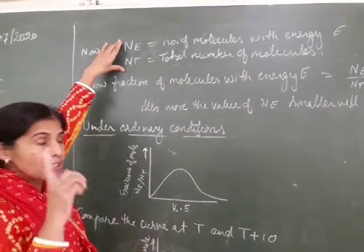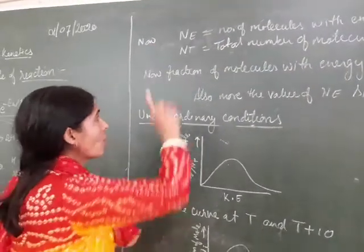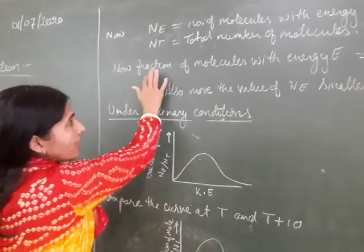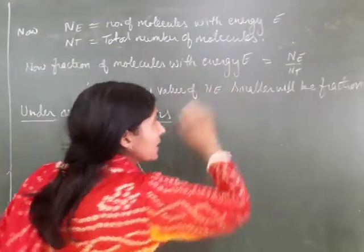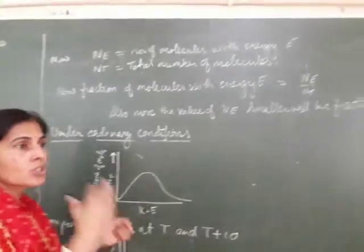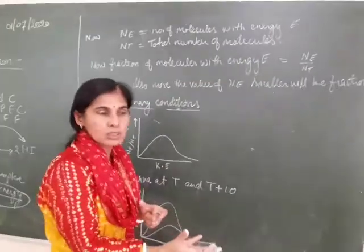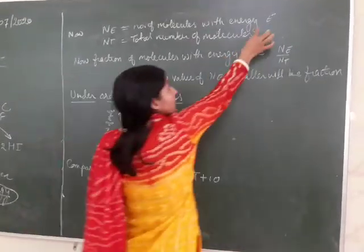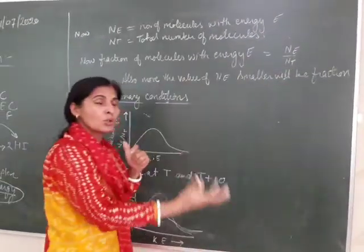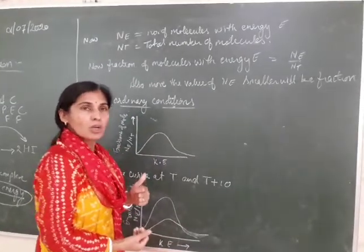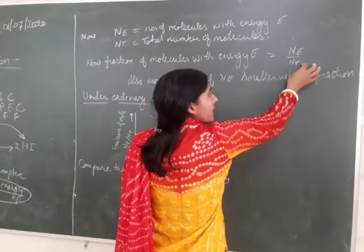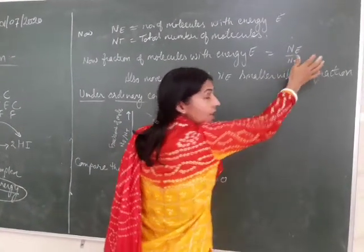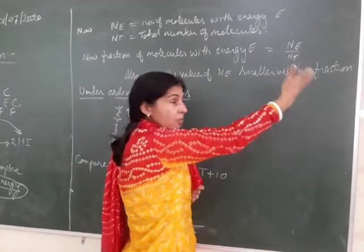Now keeping these two things in mind, you will understand what is meant by fraction of molecules with energy E. Out of the total molecules, say for example you have 100 molecules in your reaction mixture and there are only 10 molecules which have sufficient energy E. So what will be the fraction of these molecules? It will be NE by NT, that means 10 by 100. So this is how you should interpret it.